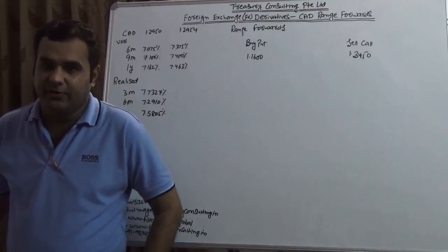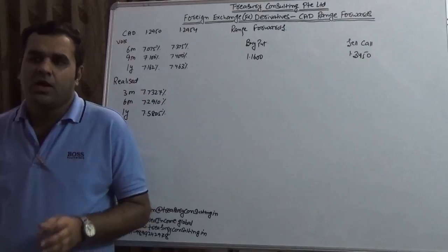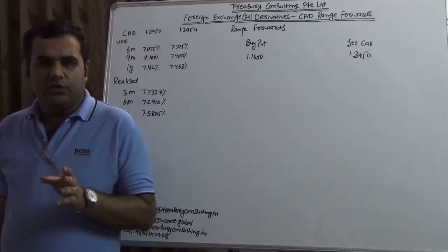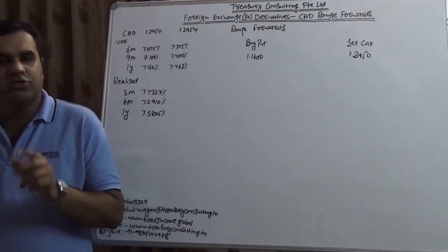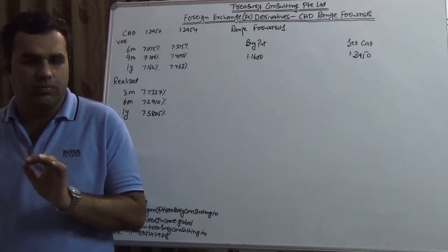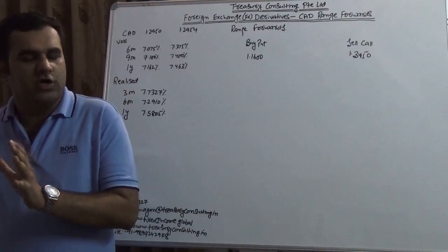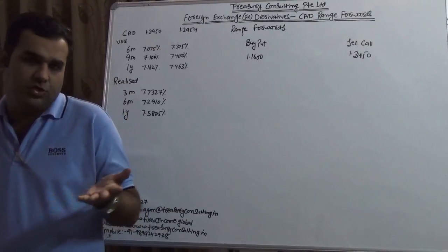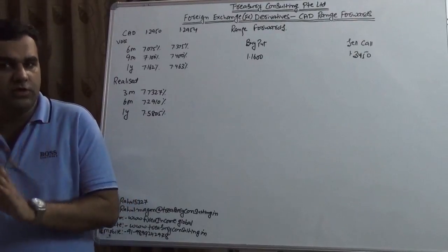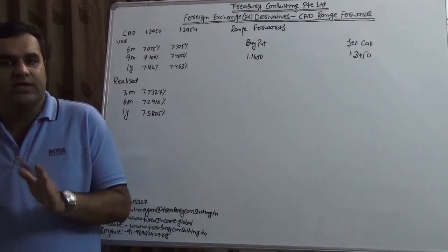There is a specific purpose of shooting this video. Of course we have a lot of videos about range forward. Roughly five days ago there was news on Bloomberg. The news suggested that two big banks of the globe, one number one bank of the globe, another which is not number one but a very famous bank which is Morgan. I'm comparing Goldman with Morgan.